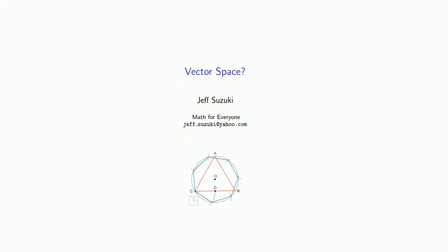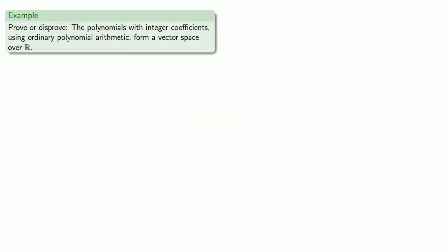Let's take a few more examples of determining whether or not a particular set deserves membership in club vector space. The main thing we need to check is whether or not our set as described meets all 10 requirements for being in a vector space.